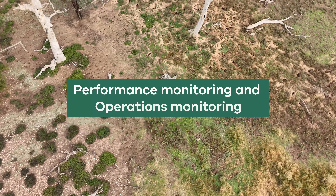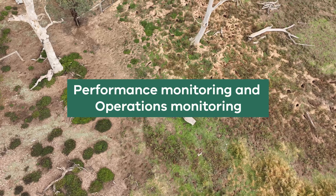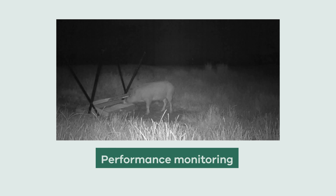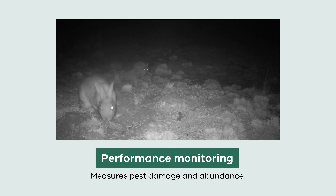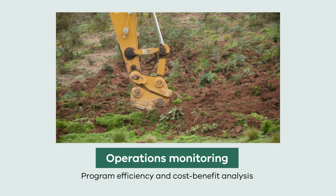Two types of monitoring are used in pest management programs: performance monitoring and operations monitoring. Performance monitoring looks at the impact of your pest management program on the pest animals and their damage, while operations monitoring focuses on the efficiency of your program to ensure that the costs don't outweigh the benefits.